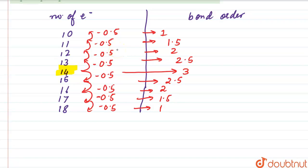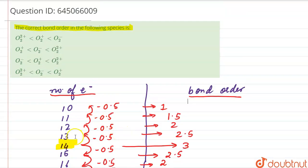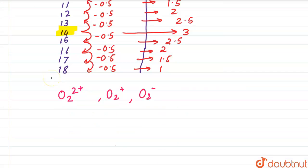So we have created a table with the number of electrons and the corresponding bond order. Now we have three species to consider: O₂²⁺, O₂⁺, and O₂⁻. For O₂²⁺, the number of electrons is 14.